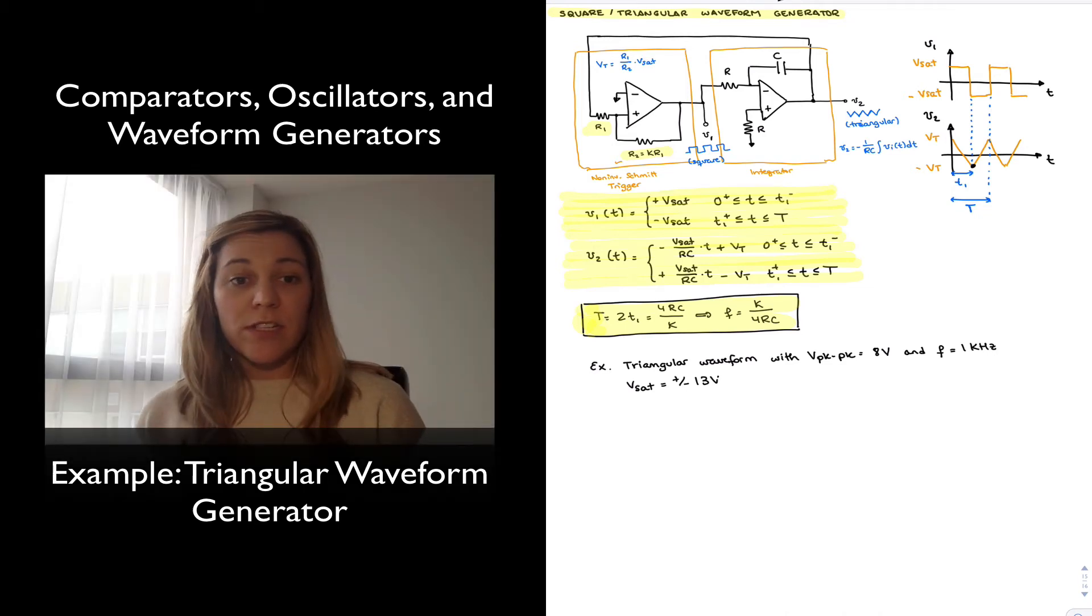Welcome back. So let's now go about designing a triangular waveform generator. And let's imagine we wanted to generate a triangular waveform with a peak-to-peak voltage of 8 volts, that means 4 volts of amplitude, and a frequency of 1 kilohertz.